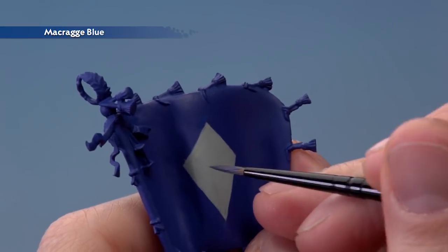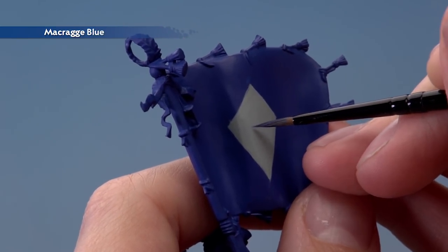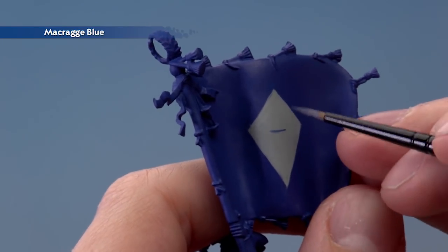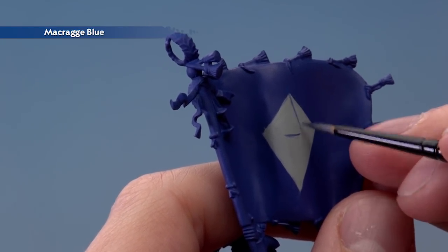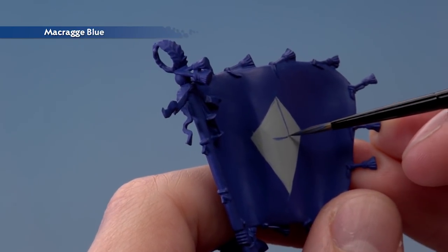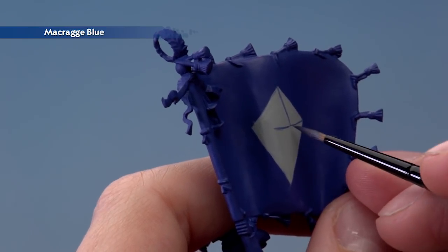Now for this you need to look at that midpoint there, those two dots slightly below it. We want to paint a line just going across so around about there like that, and then once we've got that established we can use it to start drawing lines connecting to all the edges. So we want to go up to about there like that and out to the outside edge like this, and it's just a matter of working your way around. Now should you make any mistakes just go back to Celestra Grey to neaten up before you continue.